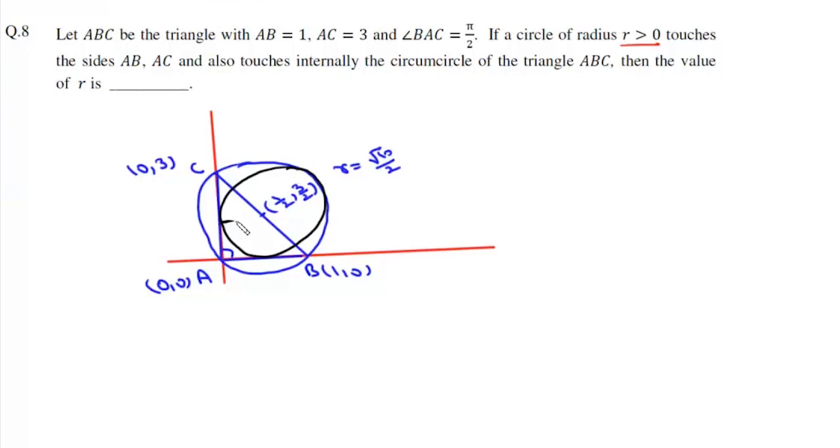Now we know that any circle which touches both the axes, its center will be (R, R), since in this case we are dealing with the first quadrant, and its radius will also be R. Now these two circles, they touch each other internally.